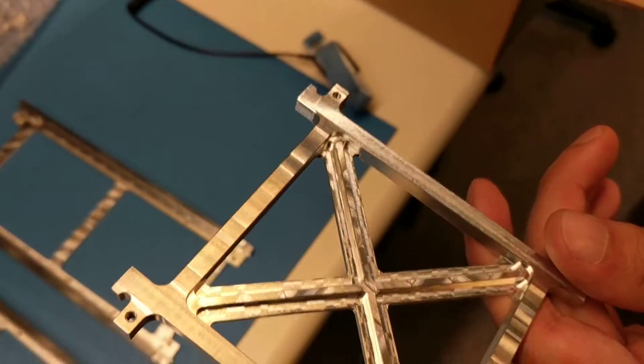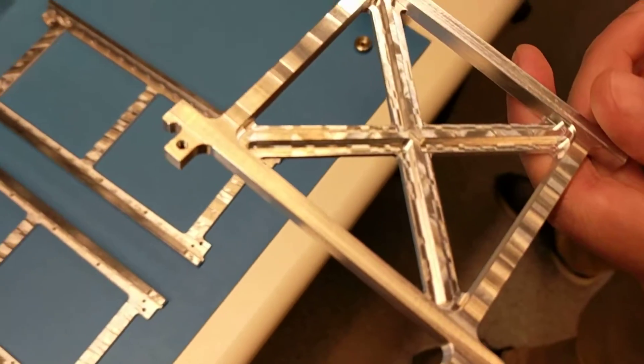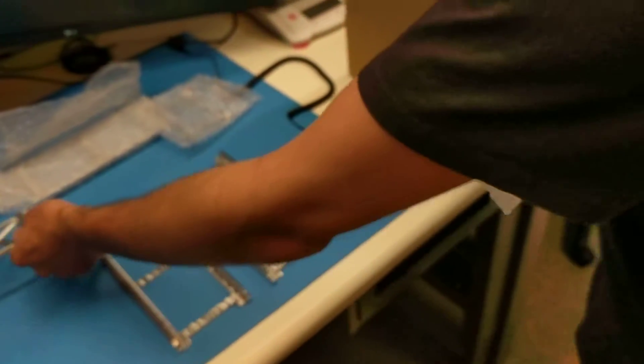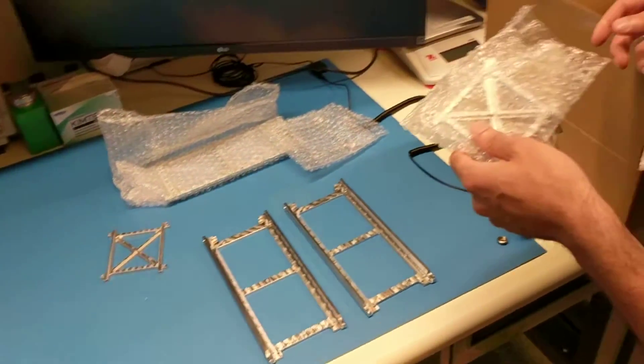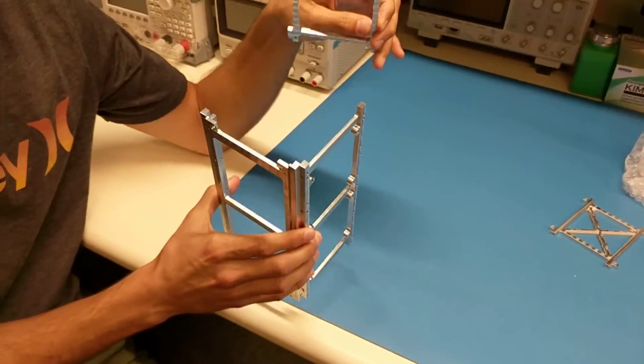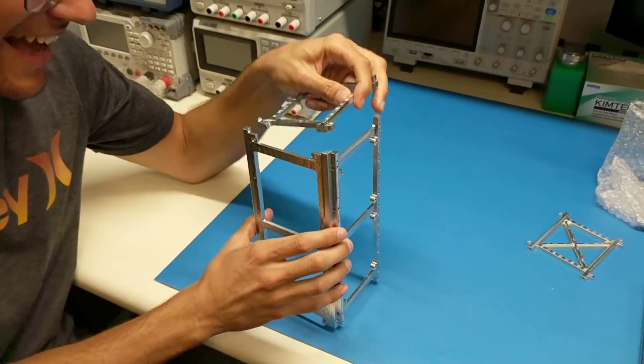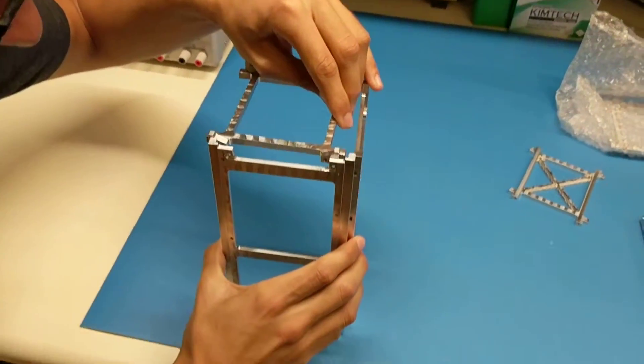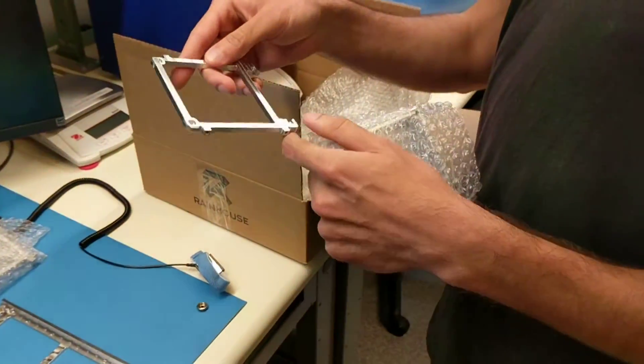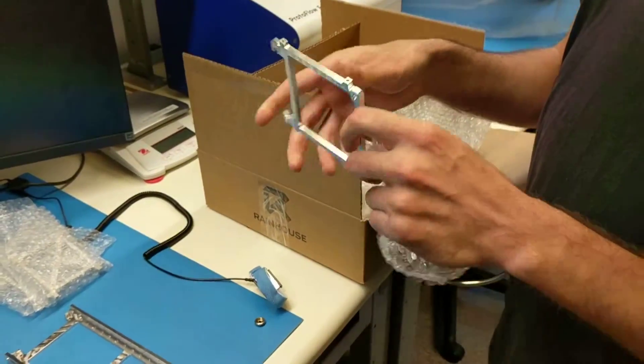You know what we should do? We should grab the calipers out and just measure the critical tolerances, see if Rainhouse nailed it or not. Oh look at this, throw it together. That's right, we have no fasteners so this makes it way harder. We'll just tape it. It'll be fine.